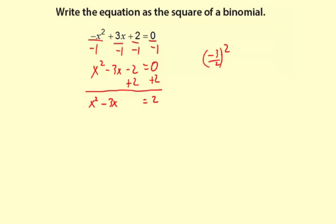So if we're going to square negative 3 halves, it's going to be negative 3 times negative 3 in the numerator, which is simply 9. And then in the denominator, 2 times 2 is 4.